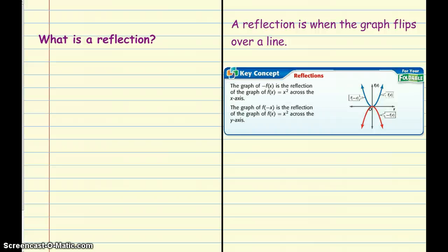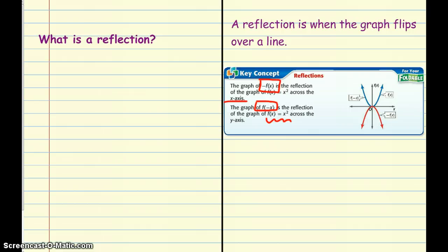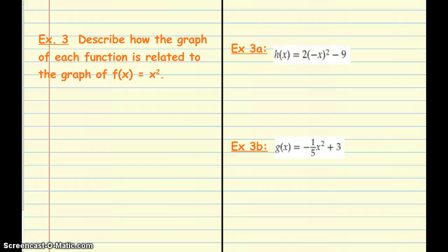The last transformation is reflections. A reflection is when the graph flips over a line — typically the x-axis or the y-axis. The negative of f of x is the reflection across the x-axis, and the graph of f of negative x is the reflection of the graph across the y-axis. Let's take a look at some examples.